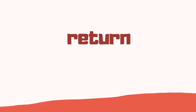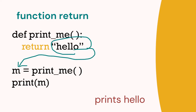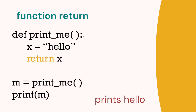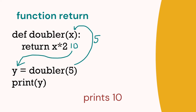We can also return a value. Starting with a simple example, instead of printing hello inside the function we return it and then print it after. When we call the function, we're expecting something to be returned back. We can also return a variable. Here we've got a function called doubler which doubles an integer — doubler is passed 5, so x equals 5, times 2 is 10, that's returned to y, and print y equals 10.